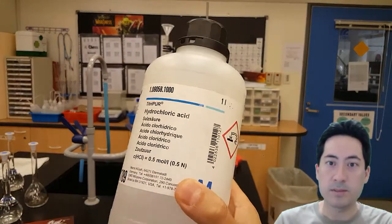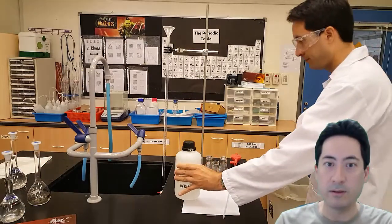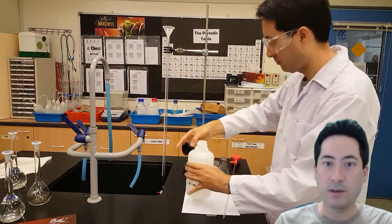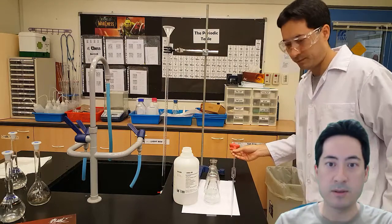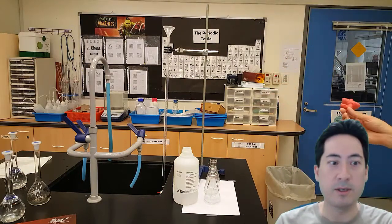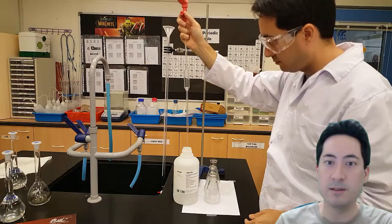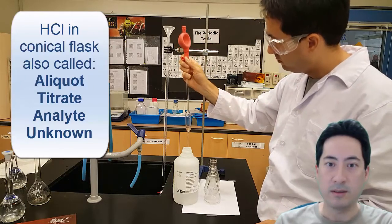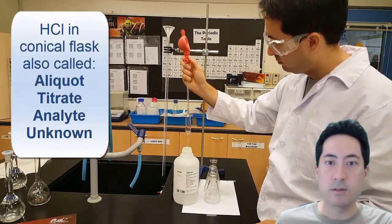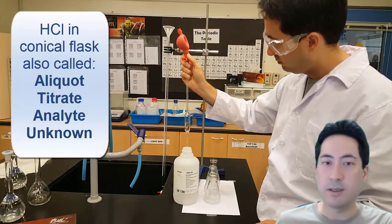So this is the substance that we're going to pretend is the unknown, it's the hydrochloric acid. We're going to pretend that even though it's 0.5 molar, we don't know what the concentration is. And so we have to pull out aliquots of this substance. This is also called the analyte or the titrate.